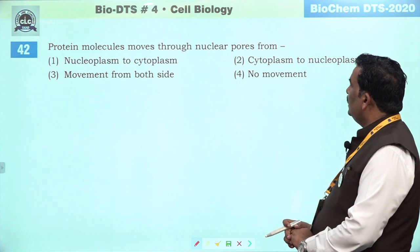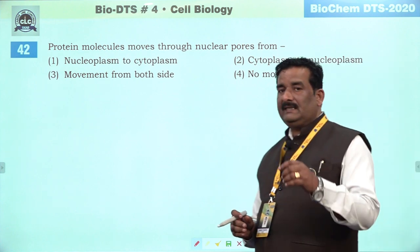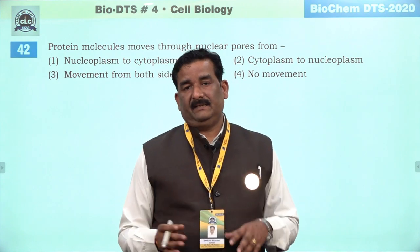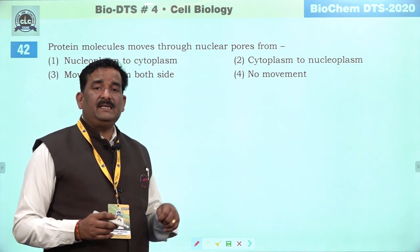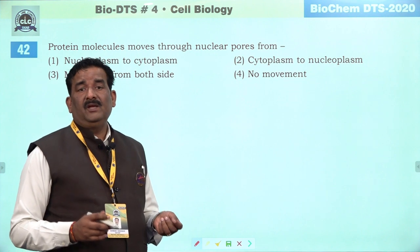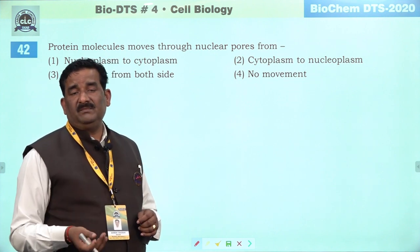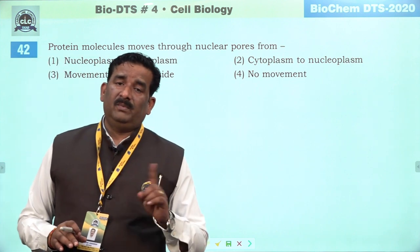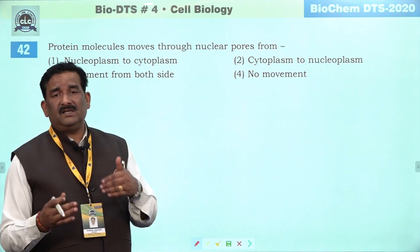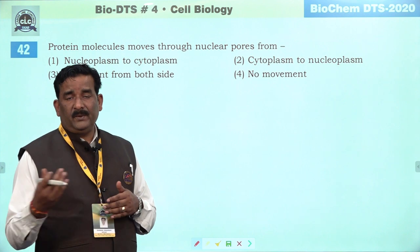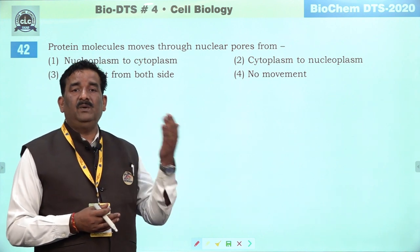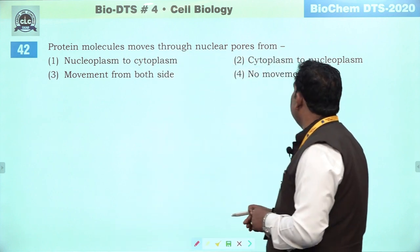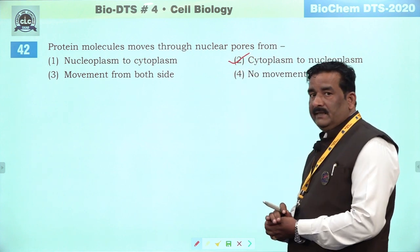Next question: protein molecule move through the nuclear pore from. NCRT mein likha hai ki protein and RNA molecule move in bi-direction. But interestingly, RNA kabhī cytoplasm mein nahi bante — aur woh kabhī nucleoplasm mein nahi ja sakte. Iska matlab hai RNA bi-directional movement nahi kar raha. Isi tarikay se protein cytoplasm mein banti hai. Yeh bi-directional jo term use kiya gaya hai uska matlab hai — protein cytoplasm se bankar nucleoplasm mein jaati hai, aur nucleoplasm mein bane hue RNA bahar jaate hain. Protein ke movement ki baat ki gayi hai, toh mera jo right answer banta hai woh cytoplasm to nucleoplasm — second is right.